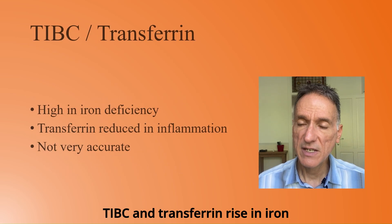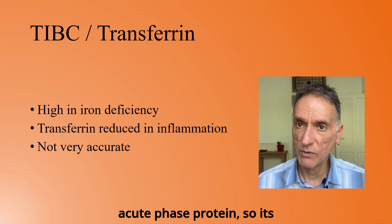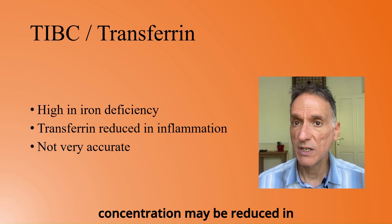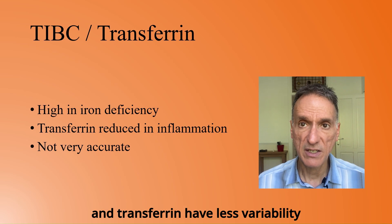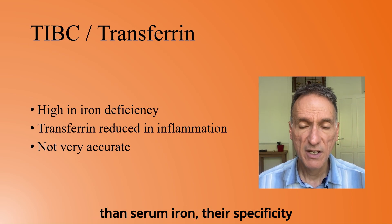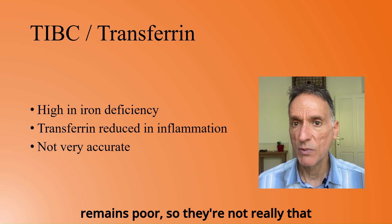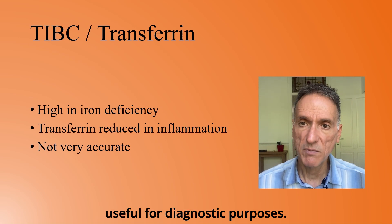TIBC and transferrin rise in iron deficiency. Transferrin is a negative acute phase protein, so its concentration may be reduced in inflammation. Although TIBC and transferrin have less variability than serum iron, the specificity remains poor, so they're not really useful for diagnostic purposes.